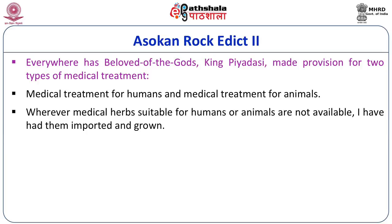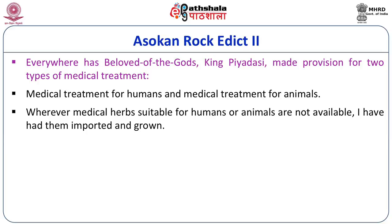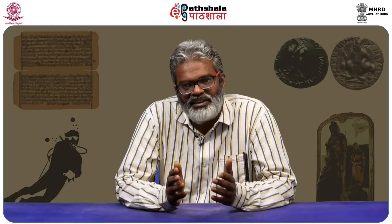He made arrangements for medical treatment for both humans and animals. Wherever medical herbs suitable for humans or animals were not available, he had them imported and grown. Where medical roots or fruits were not available, he imported them and grew them. He also planted trees along the sides of roads. These charitable activities of Ashoka, by taking care of animals and humans and their welfare, reflect his movement toward the way of Dhamma — a state of mind reached after the Kalinga war. This is reflected in this particular inscription.